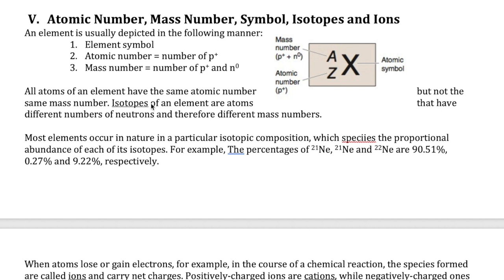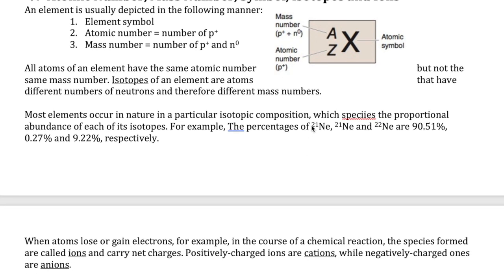Isotopes are basically elements that have different numbers of neutrons. Because they have different numbers of neutrons, they give different mass numbers, even though they're the same element. An example is the three isotopes of neon: isotope 20, isotope 21, and isotope 22. They all differ by the number of neutrons — each one has one more neutron than the previous.